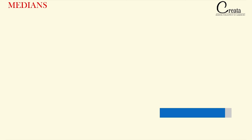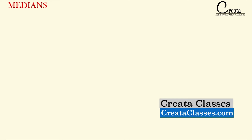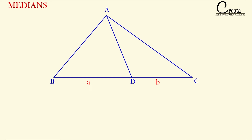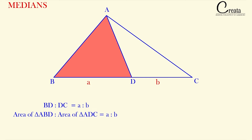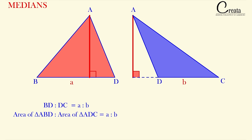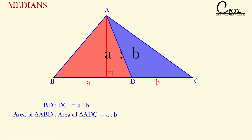Moving further, we will start with a fundamental: the ratio of areas of triangles with the same altitudes will be equal to the ratio of their bases. For example, in this figure, if the ratio of BD to DC is A:B, then the ratio of the area of triangle EBD to the area of triangle EDC will also be equal to A:B. The ratio of the areas of both these triangles equals the ratio of their bases when their altitudes are the same.